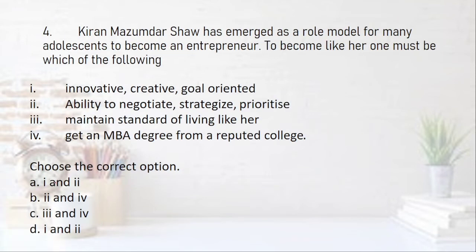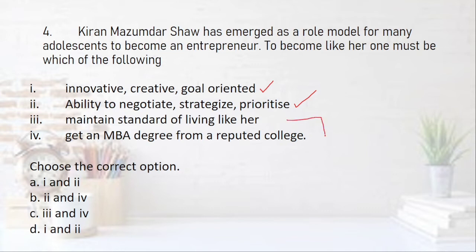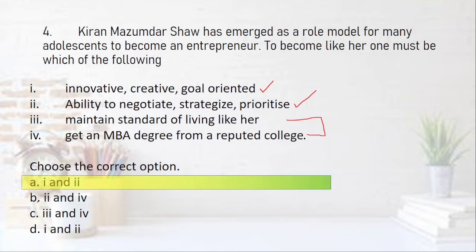Fourth question: Kiran Mazumdar Shaw has emerged as a role model for many adolescents to become an entrepreneur. To become like her, one must be: innovative and creative, goal oriented — yes, this is needed. Ability to negotiate, strategize and prioritize — this is also correct. Maintain a standard of living like hers — no, that is not necessary. Get an MBA degree from a reputed college — that is also not a must; it is a positive point but not required. Many people get MBA degrees from reputed colleges but not all become Kiran Mazumdar Shaw. So the right answer is options one and two — innovative/creative/goal oriented, and ability to negotiate, strategize and prioritize.